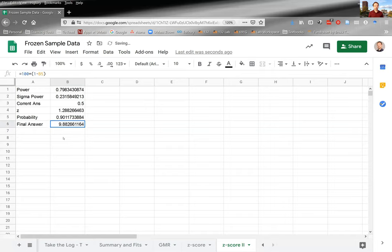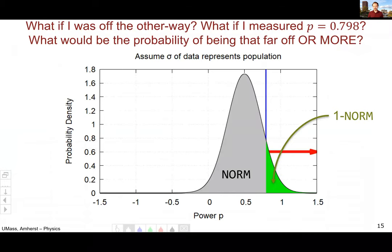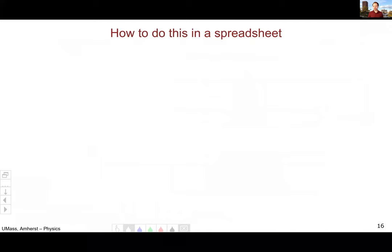So I get a 9.8%. So one time in 10, that's still really common occurrence. One time in 10 happens all the time. That's not weird at all. So one time in 10, I'll measure 0.8 with the standard deviation of my process.